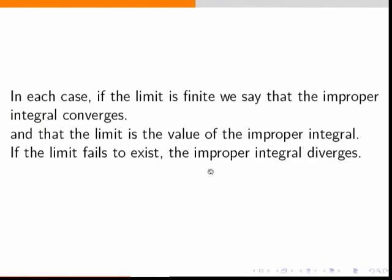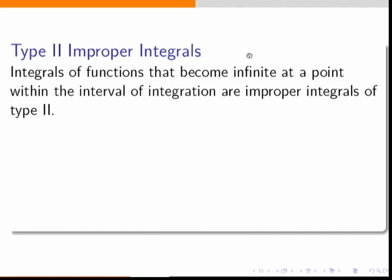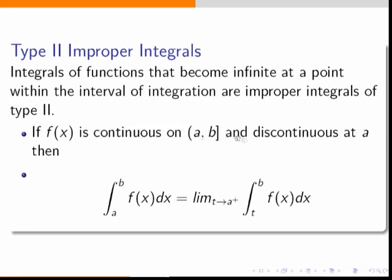Today we focus on improper integrals of the second type — when the function becomes infinite at a point within the interval or at the endpoint. If f(x) is continuous on (a, b] and discontinuous at a, then ∫ₐᵇ f(x) dx is written as limit t→a⁺ of ∫ₜᵇ f(x) dx, replacing the lower limit a with t.